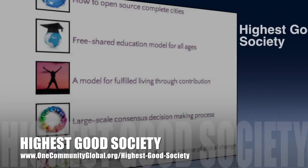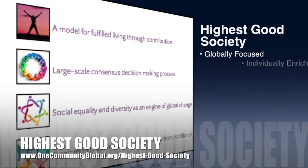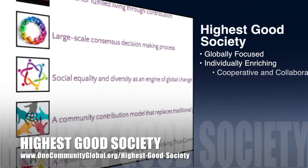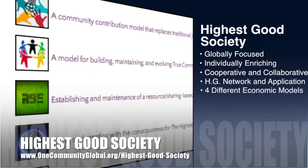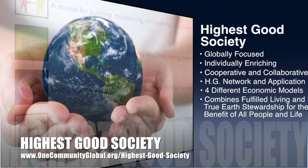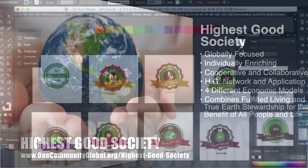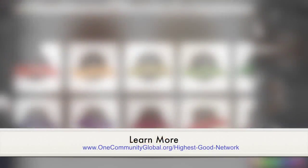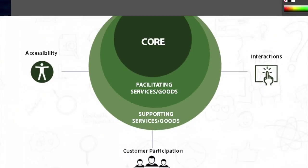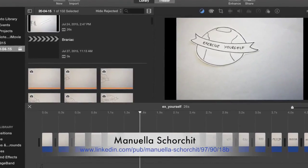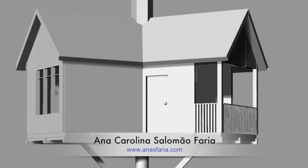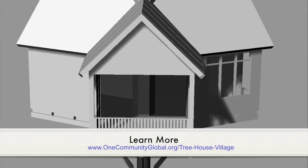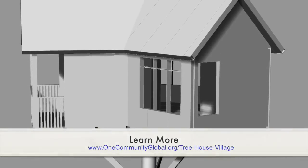The One Community approach to Highest Good Society is globally focused, individually enriching, cooperative and collaborative, includes a Highest Good network and application, four different economic models, and combines fulfilled living and true earth stewardship for the benefit of all people and all life on this planet. Lucas from the graphic design intern team continued creating badges for the award system in the Highest Good network application. Manuel of the graphic design intern team continued working with service design student Carolina on the online presentation document for the Treehouse Village, integrating service design methods into their online magazine and videos, and working on 3D modeling which includes structural and external views.